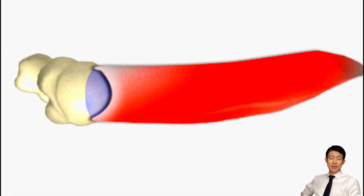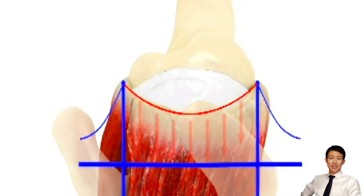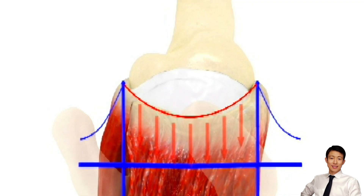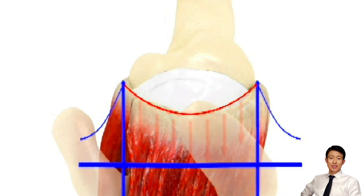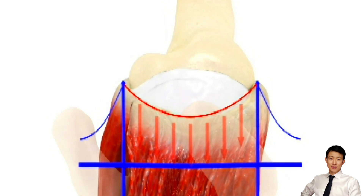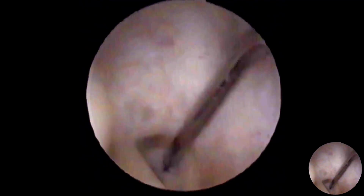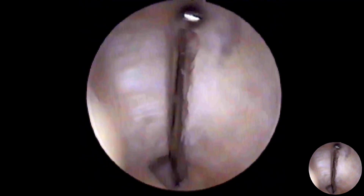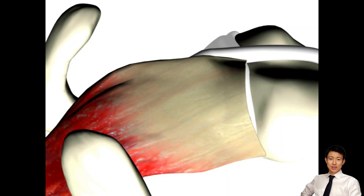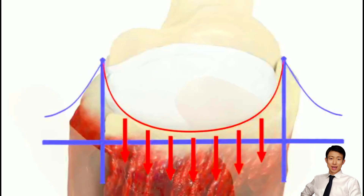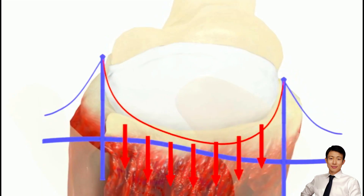The rotator cable acts like a suspension bridge, transferring loads across the cuff and shielding the thinner, avascular crescent zone. Tears in the crescent may be tolerated biomechanically, while cable disruption often leads to significant dysfunction.